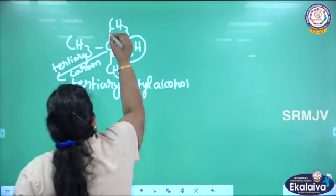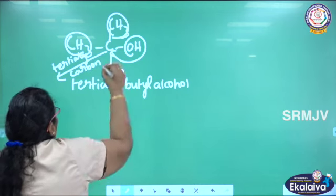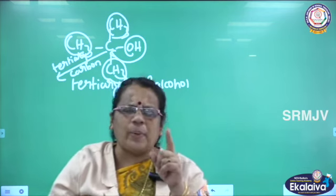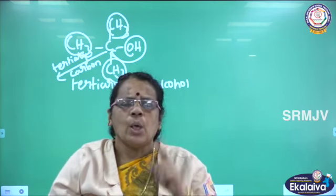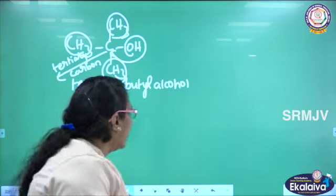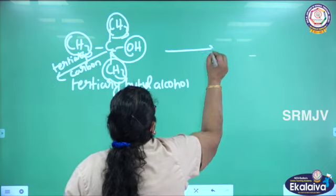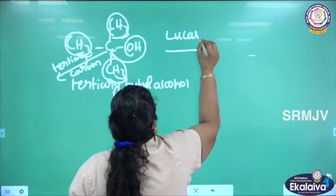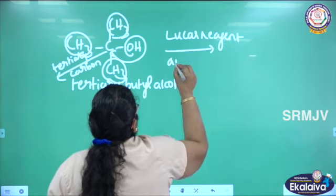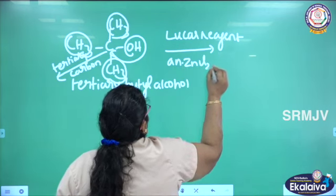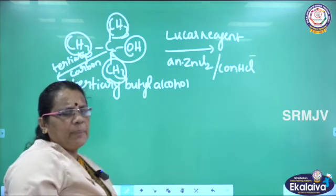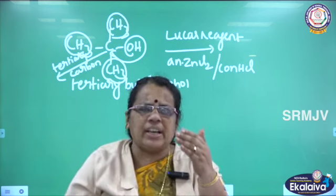There will be no hydrogen attached to the carbon; towards the other side you can see three bulky groups attached to the carbon. So what is the condition for a tertiary alcohol? The OH group is attached to tertiary carbon where the carbon doesn't have hydrogen, or the carbon will have three bulky groups. We are going to add Lucas reagent — anhydrous zinc chloride and concentrated HCl.